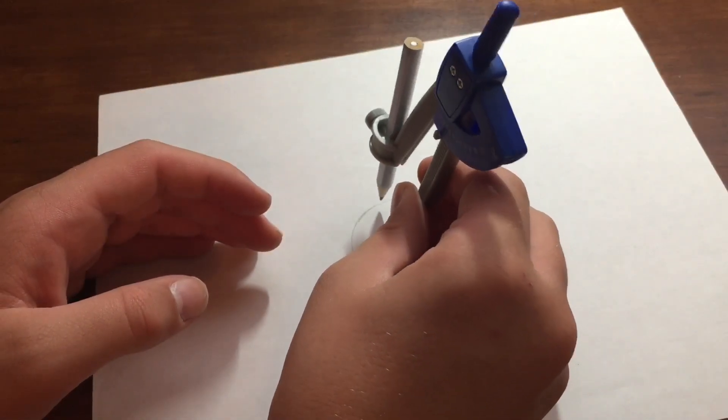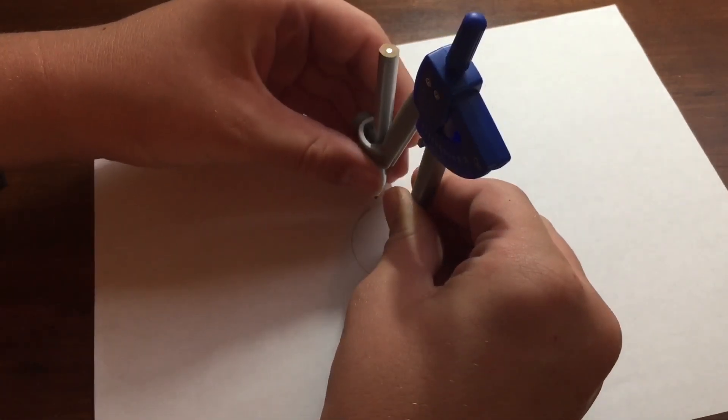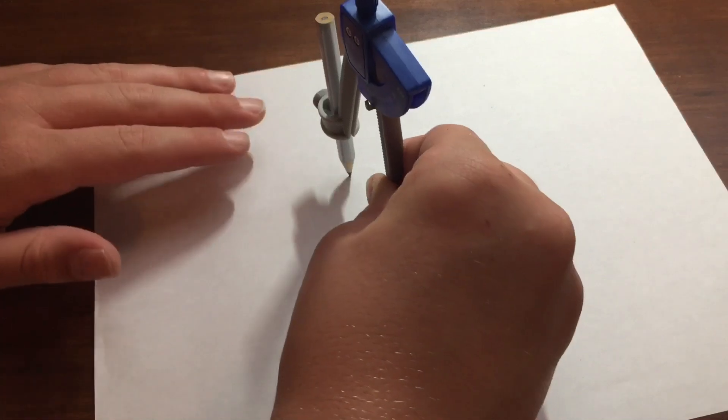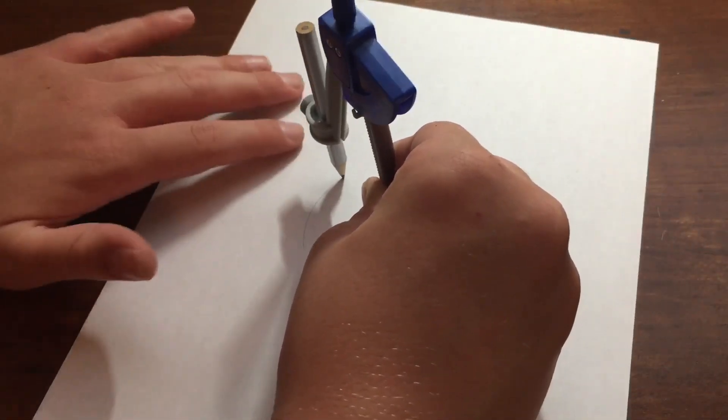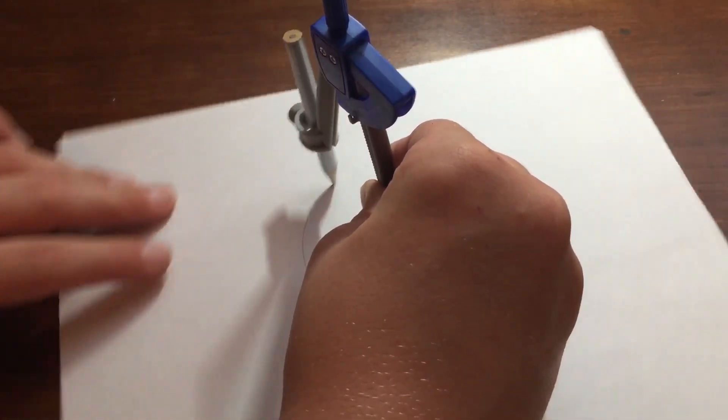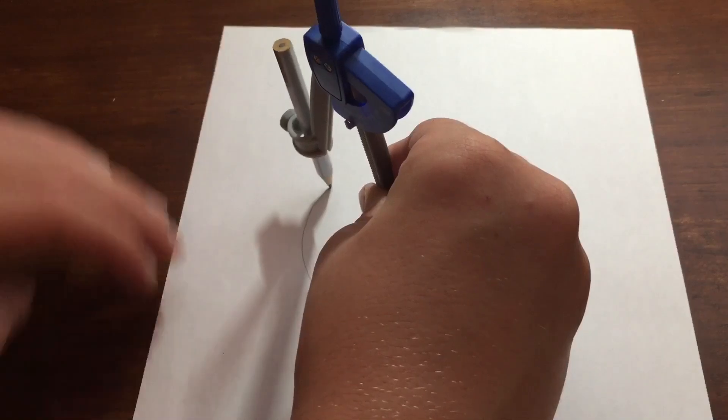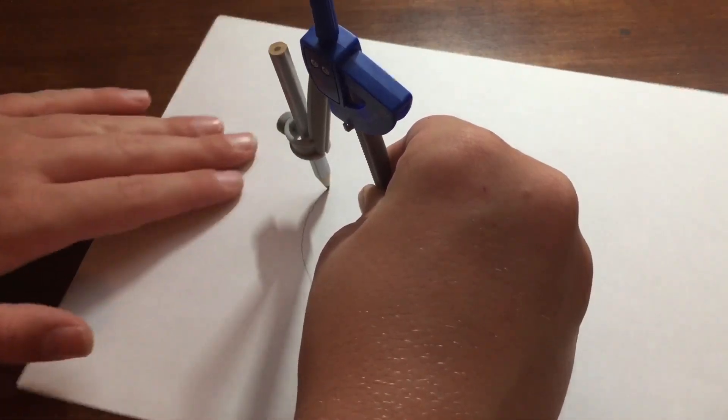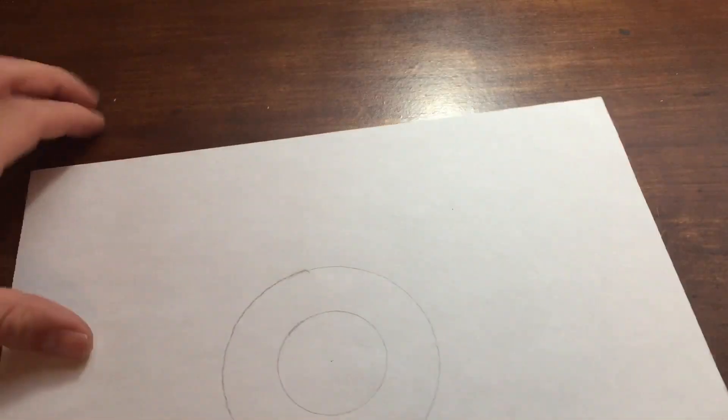Now, I'm gonna draw a bigger circle. If you want to draw a bigger circle, simply extend your compass out farther. Now, I have just constructed another perfect circle.